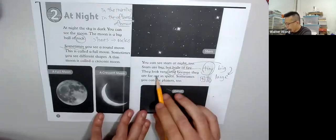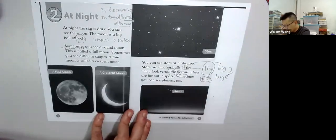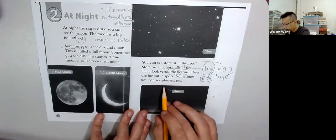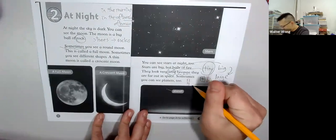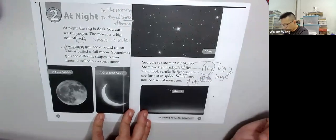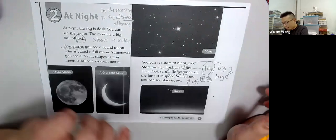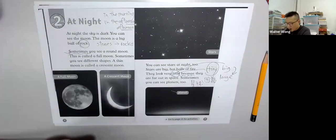Because they are far out in space. Sometimes you can see planets too, because they are far out in space.